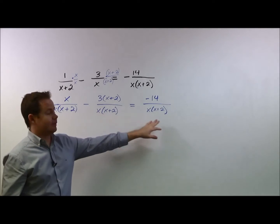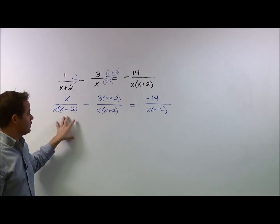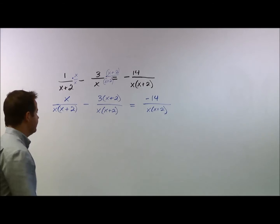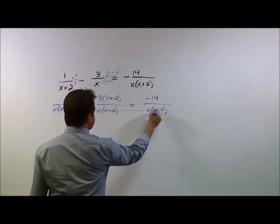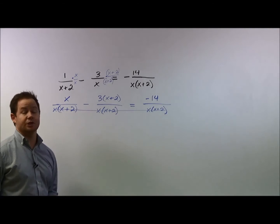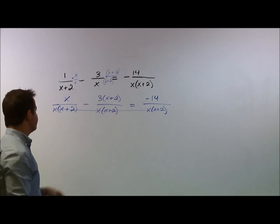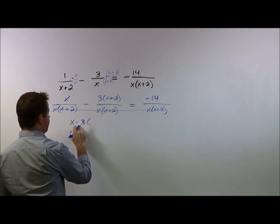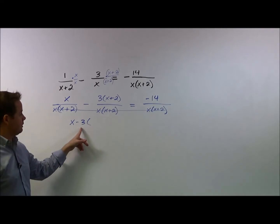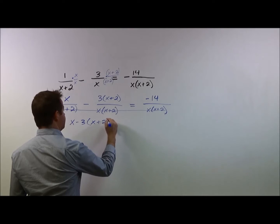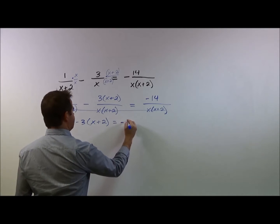So now that all of our denominators are the same, if it's an expression where the left side equals the right side and all the denominators are the same, we can go ahead and cancel out those denominators and just set the numerators of each expression equal to each other. So for this, it'll look like x minus 3, and that's where the negative comes into play. Ultimately, we're going to be distributing a negative 3 here, times x plus 2 equals negative 14.